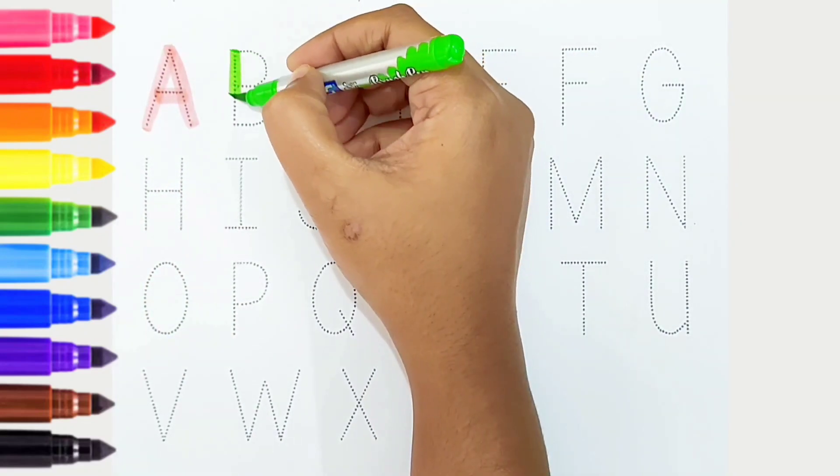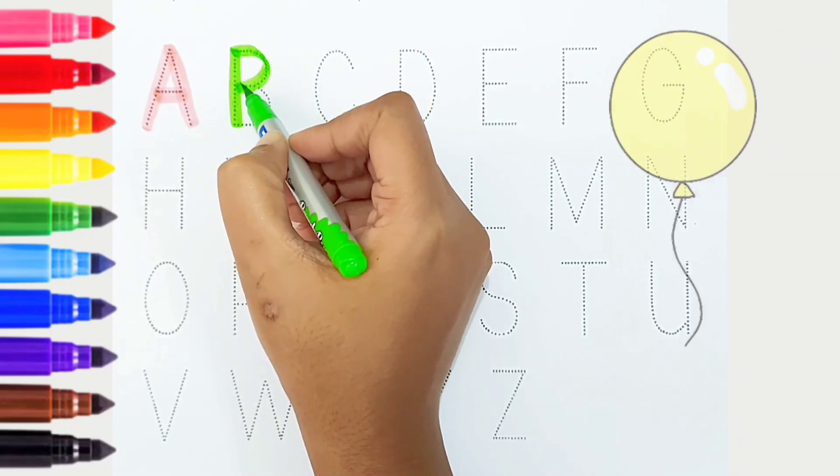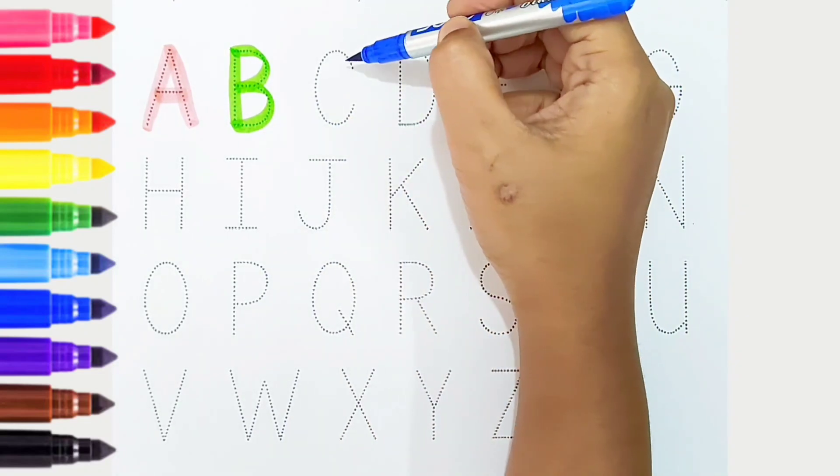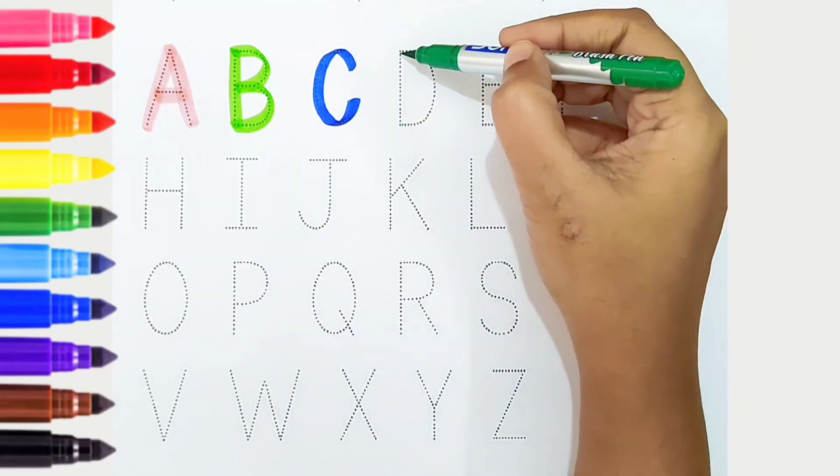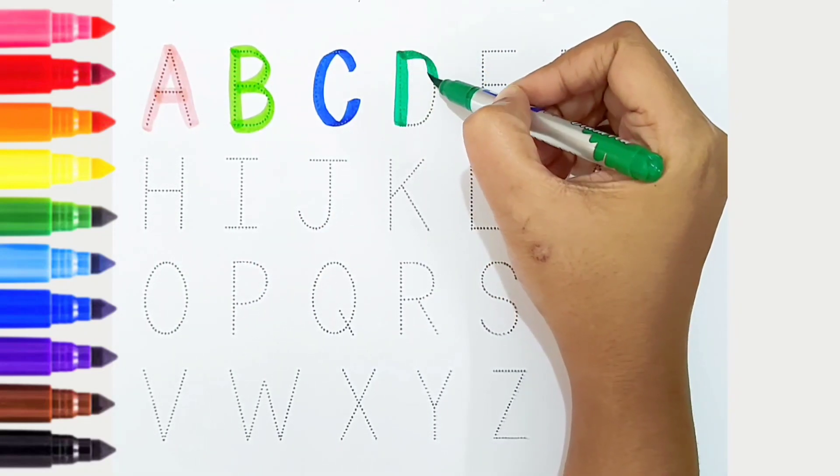B, light green color, is for balloon. C, dark blue color, is for candy. D, dark green color, is for dog.